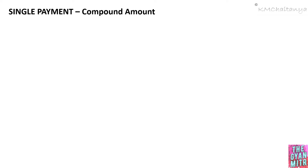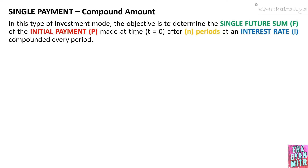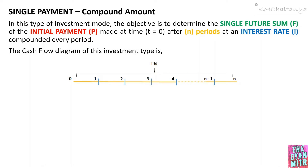In single payment compound amount, the objective is to determine a single future sum F of the initial payment P made at time t equal to 0, after n interest periods at an interest rate i which is compounded every period. The cash flow diagram consists of a timeline with an initial payment P at time t equal to 0, and we are supposed to determine the value of the single future sum after n interest periods.